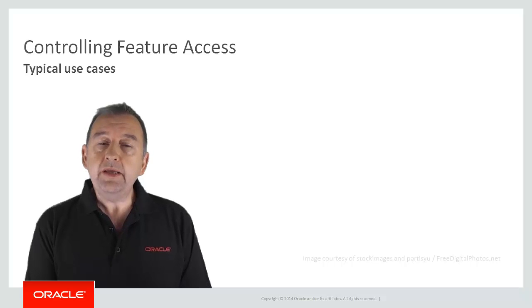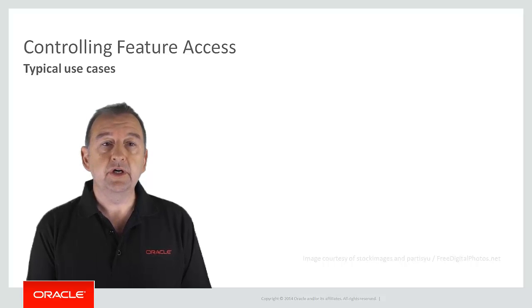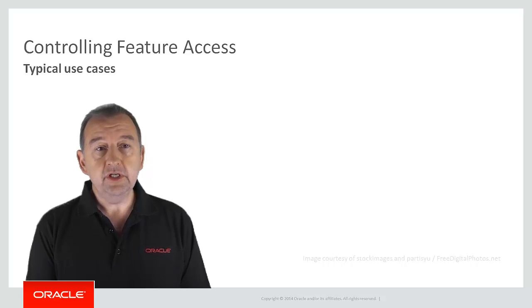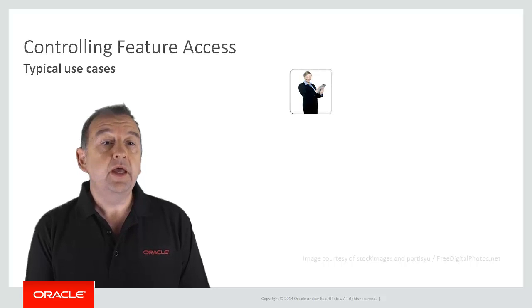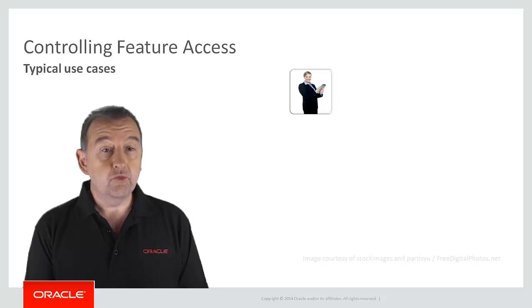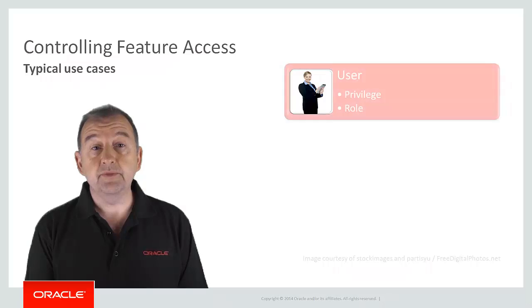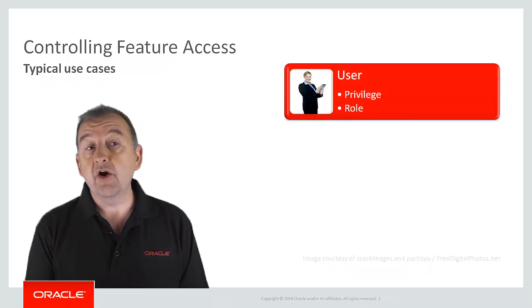There are three broad factors in Oracle MAF by which you can restrict access to a feature. Firstly, you can restrict access based on who is using the application. It could be that your application requires you to have certain privileges or to be in a certain role in order to access a feature — so you can only access the HR update feature if you're an HR manager.